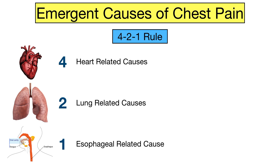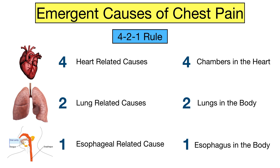The way it works is there are four heart-related emergencies that can cause chest pain, two lung-related emergencies, and one esophageal-related emergency. Here's the cool part that makes it really easy to remember: there are four heart-related causes because there are four chambers in the heart, two lung-related causes because there are two lungs, and one esophageal-related cause because there is one esophagus.